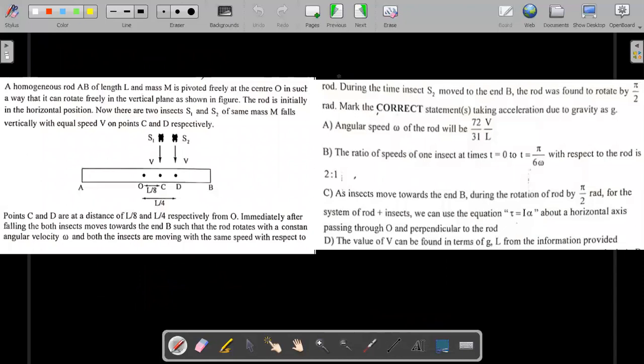With this idea, let's go back and mark the correct options. The first one we end up getting correct. A is correct and B is pretty obvious. He's just checking whether you're reading the question carefully. Once he says insects are moving with same speed with respect to the rod, the speed ratio should be one is to one. So B is not correct. For the system of rod and insects, we cannot use tau equals I alpha because the moment of inertia is changing. So C should not be marked. The correct options are A and D.